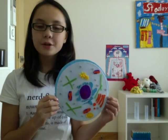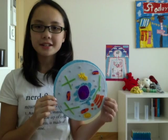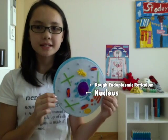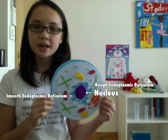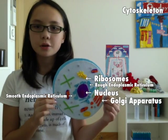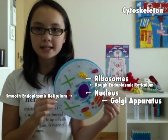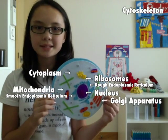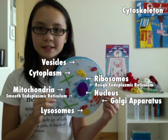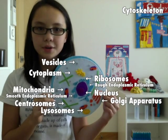What are the main organelles inside of a standard eukaryotic animal cell? Inside the normal animal cell, there is the nucleus, rough endoplasmic reticulum, smooth endoplasmic reticulum, ribosomes, cytoskeletons, Golgi apparatus, cytoplasm, mitochondria, vesicles, lysosomes, and the centrosome.